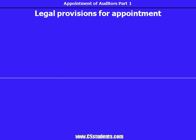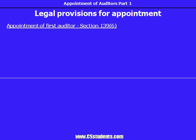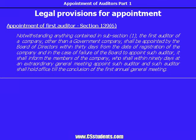Now let's look at the legal provisions relating to appointment. Appointment of first auditor — Subsection 6 of Section 139 talks about the appointment of first auditor. The text reads: Notwithstanding anything contained in subsection 1, the first auditor of a company, other than a government company, shall be appointed by the board of directors within thirty days from the date of registration of the company. And in the case of failure of the board to appoint such auditor, it shall inform the members of the company, who shall within ninety days at an extraordinary general meeting appoint such auditor, and such auditor shall hold office till the conclusion of the first annual general meeting.